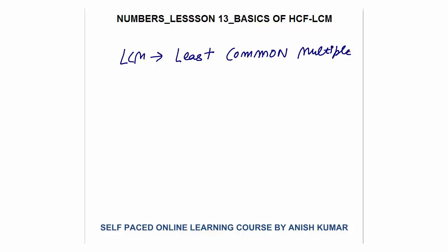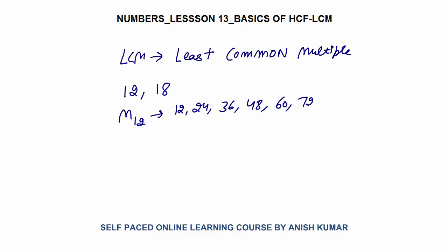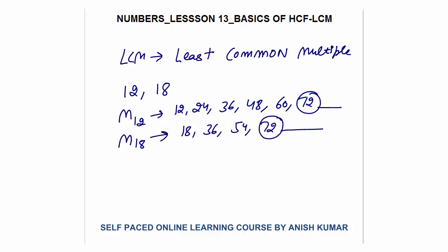LCM stands for Least Common Multiple. For example, I will take two numbers 12 and 18. Multiples of 12 are 12, 24, 36, 48, 60, 72, and so on. Multiples of 18 are 18, 36, 54, 72, and so on. The common multiples include 36 and 72, but we are interested in the least common multiple, so LCM is equal to 36.